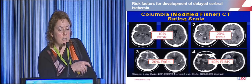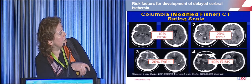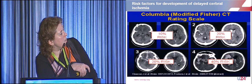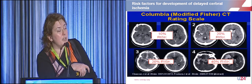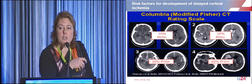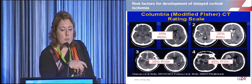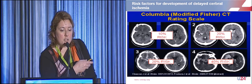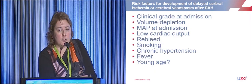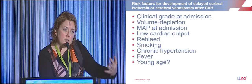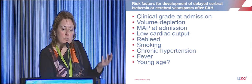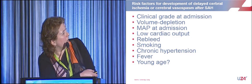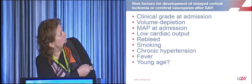Risk factors for delayed cerebral ischemia include the amount of blood on CT, intraventricular blood, and blood in the basal cisterns. It is thought to be caused by blood breakdown products like oxyhemoglobin causing an inflammatory response and vasospasms, but the exact mechanism is not fully understood — PET studies show hypoperfused areas don't always correlate with angiographic vasospasm locations. Key modifiable factors: keep patients normovolemic, maintain blood pressure and cardiac output, and manage fever.